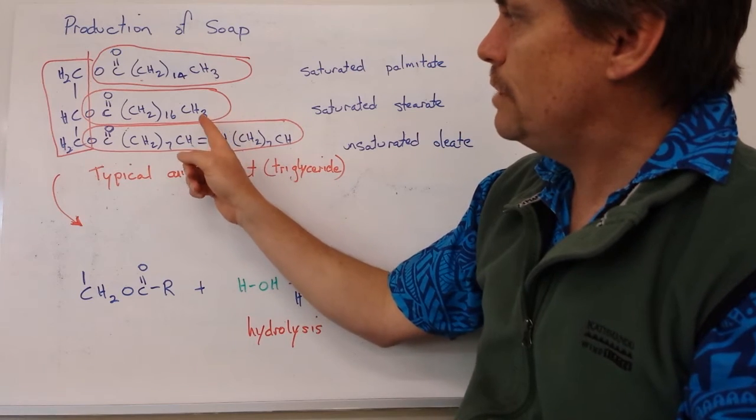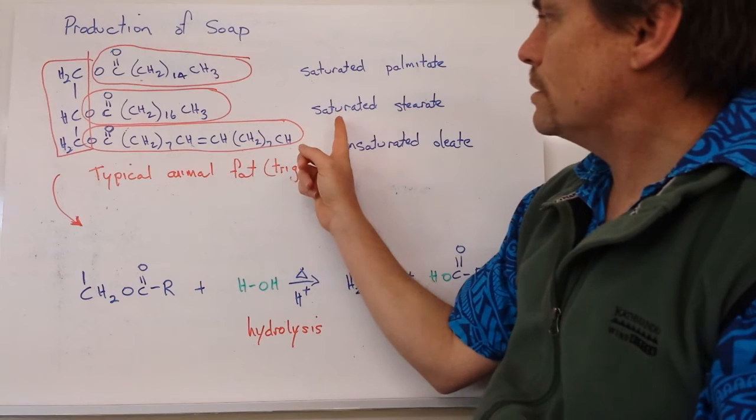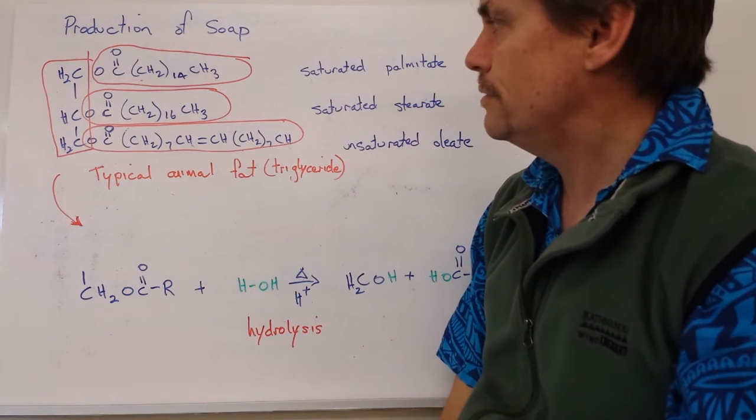The second one here, we've got 17, 18 carbons. Once again, no double bonds, so we've got a saturated version of what we call a stearate derivative.